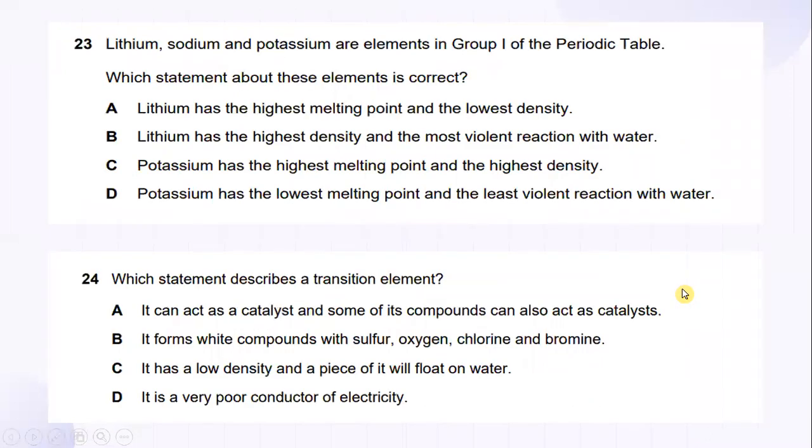Lithium, sodium and potassium are elements in group 1 of the periodic table. Which statement about these elements is correct? If you refer to chapter metals property, it describes about the answer of the lithium, sodium and potassium. Where the answer is lithium has the highest melting point and the lowest density.